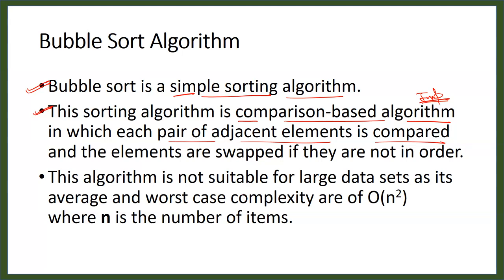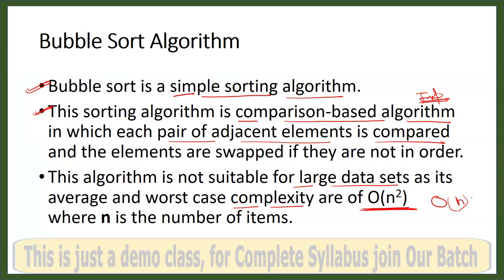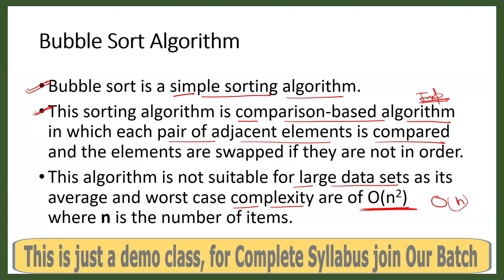This algorithm is not suitable for large data sets — for example, 10,000 or one lakh elements. For a small number of elements you can use bubble sort, but not for large data sets. The average and worst case complexity is O(n²). The best case complexity is O(n). Remember that average and worst case complexity is O(n²).